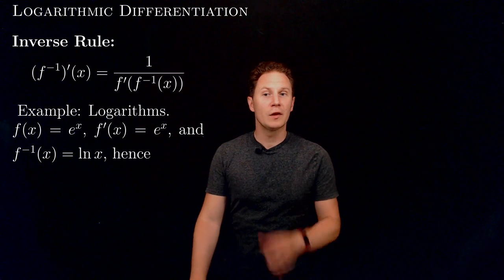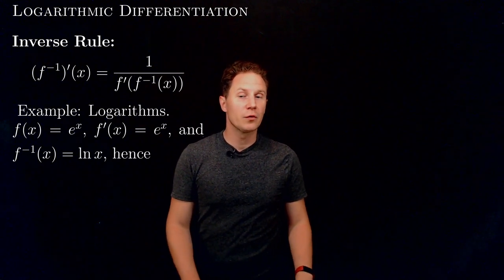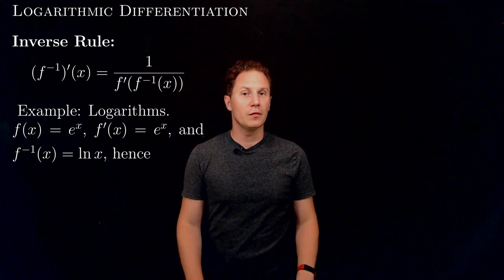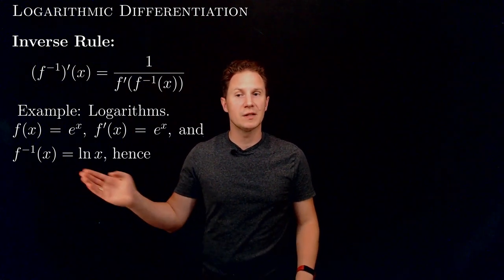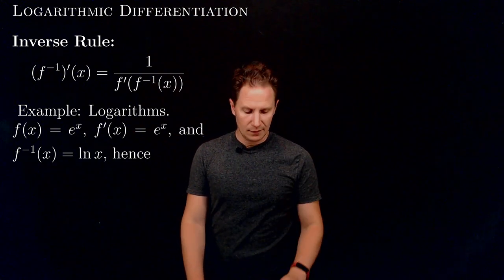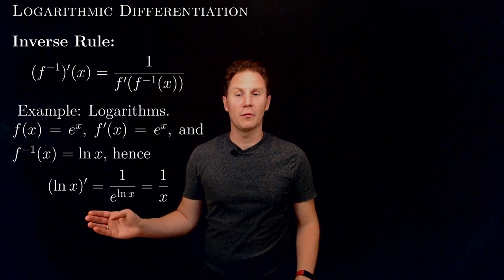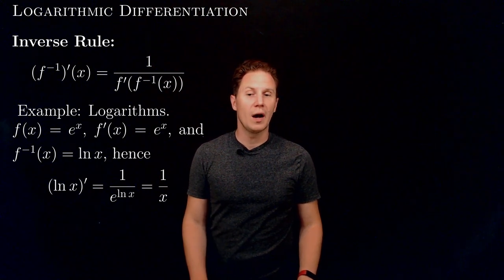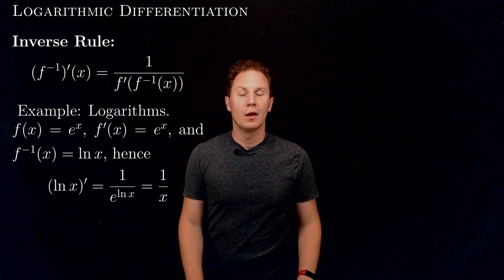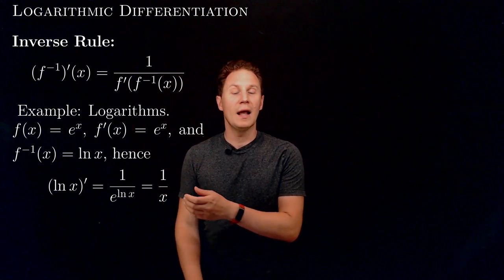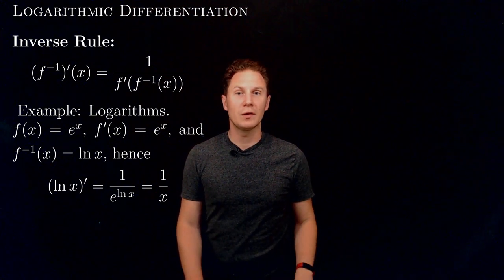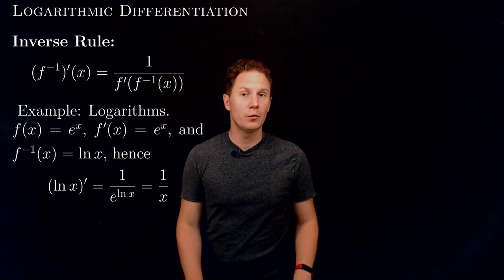So if we apply this inverse rule to the exponential function e to the x, whose derivative is itself e to the x and whose inverse is the natural logarithm of x, we obtain the derivative of the natural logarithm of x being 1 divided by e raised to the ln of x. And since e to the ln of x is simply x, we get that the derivative of the natural logarithm of x is simply 1 over x.